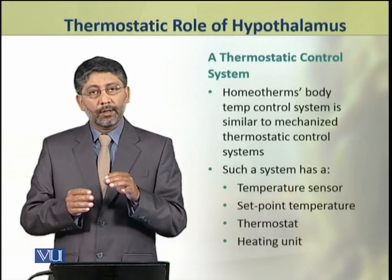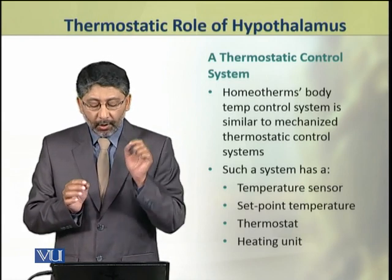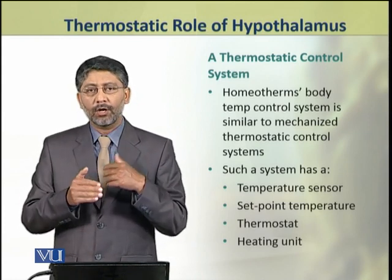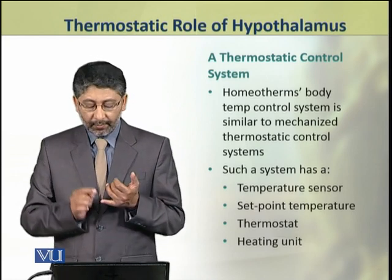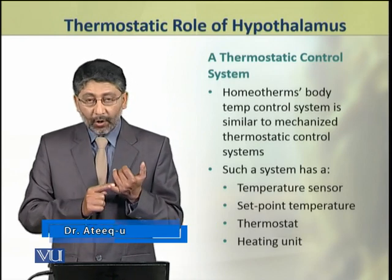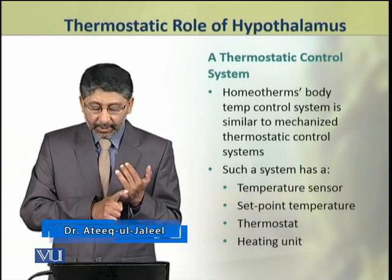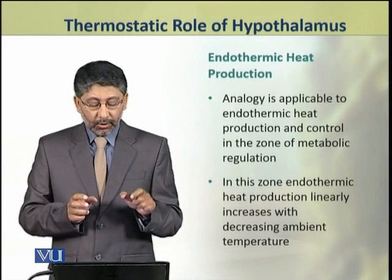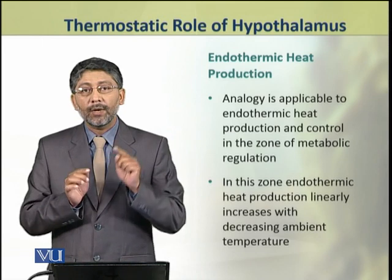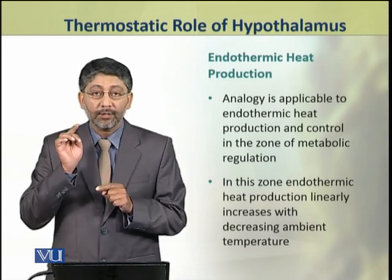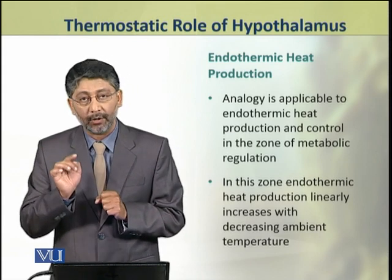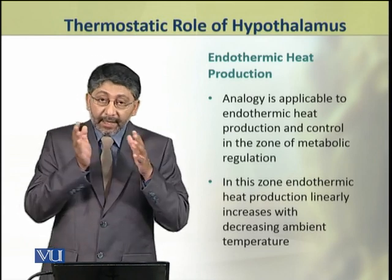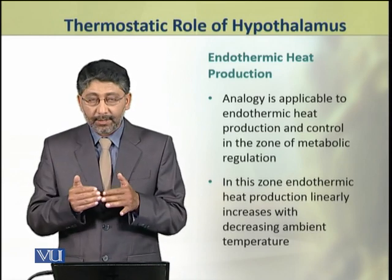Dear students, a homeotherm's body temperature control system is similar to a mechanized thermostatic control system. Such a system has a temperature sensor, a set point temperature, a thermostat and a heating unit. This analogy to the mechanized system is applicable to endothermic heat production and control in the zone of metabolic heat regulation. In this zone, endothermic heat production linearly increases with decreasing ambient temperature.